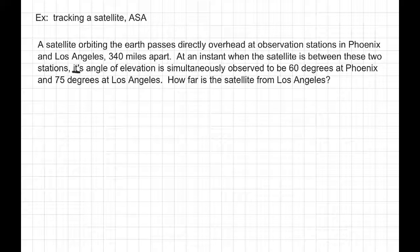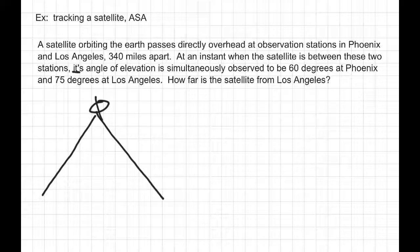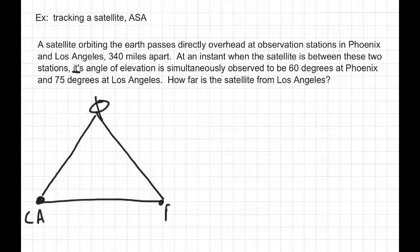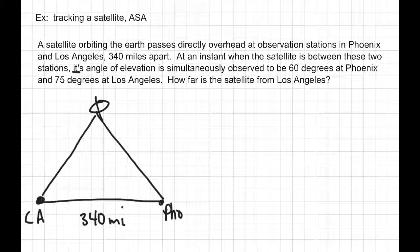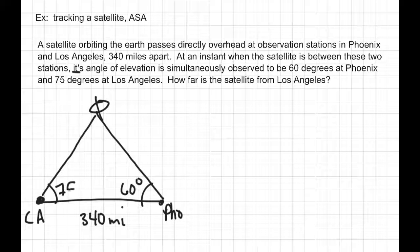Let's draw a picture. Here's the satellite, and here are my two observation stations — here's Los Angeles and here's Phoenix. They are 340 miles apart. The angle of elevation at Phoenix is 60 degrees, and the angle of elevation at Los Angeles is 75 degrees. We want to find out how far the satellite is from Los Angeles.